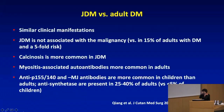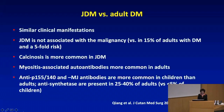Regarding JDM versus adult dermatomyositis: the clinical manifestations with respect to the skin are really quite equivalent. The skin manifestations of JDM are very similar to what we see in adults. As mentioned, there's no association with malignancy in JDM. We do see more calcinosis in juvenile dermatomyositis, and the myositis-associated autoantibodies are more common in adults, although some myositis-specific antibodies are more common in children.